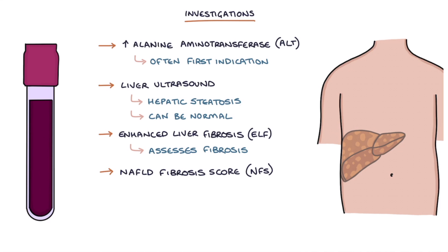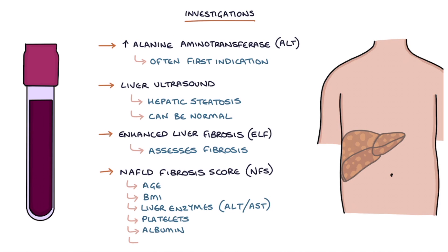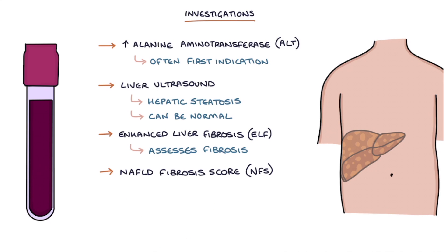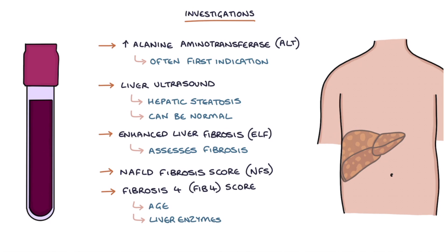The NFS is based on an algorithm of age, BMI, liver enzymes including AST and ALT, platelet count, albumin, and diabetes. Another option for assessing liver fibrosis is the Fibrosis-4, or FIB-4 score, which is based on an algorithm that takes into account age, liver enzymes specifically AST and ALT, and the platelet count.